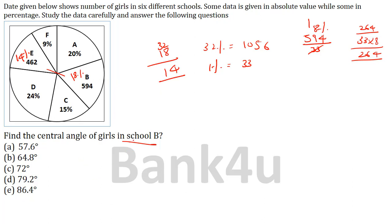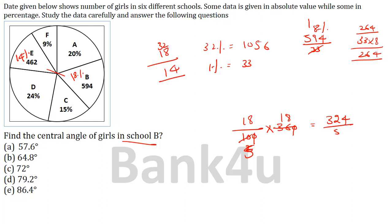We need to find the central angle of girls in school B. School B is 18 percent out of 100 percent, and the full circle is 360 degrees. So central angle = 18 divided by 100 into 360 = 18 into 3.6 = 64.8 degrees. The answer is option B.